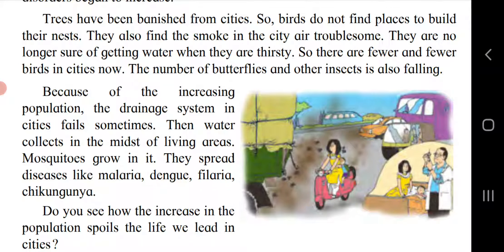Trees have been banished from cities, so birds do not find places to build their nests. They also find the smoke in the city air troublesome, and they are no longer sure of getting water when they are thirsty. As a result, there are fewer and fewer birds in cities, and the number of butterflies and other insects is also falling. Birds move to other places like villages, where population and pollution are less.